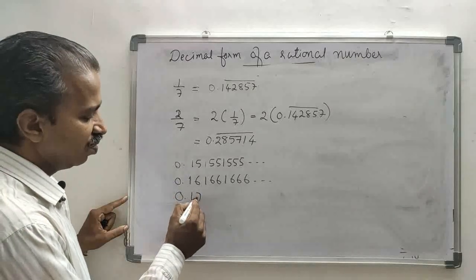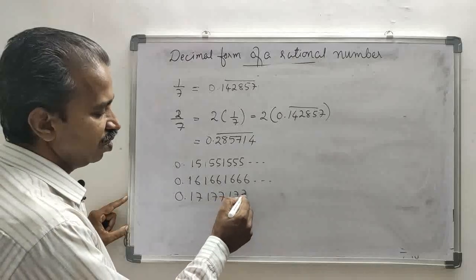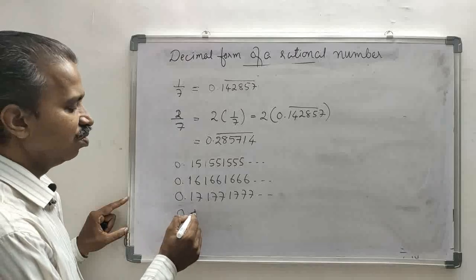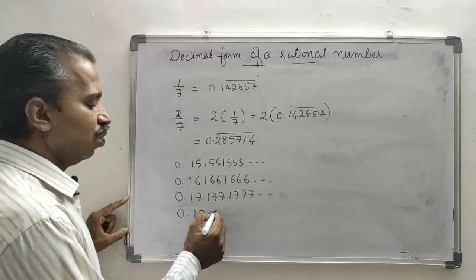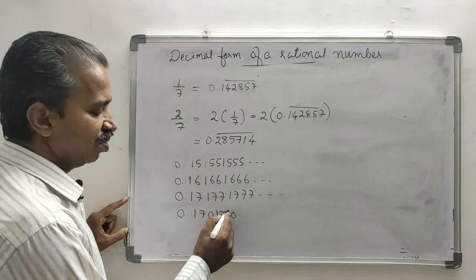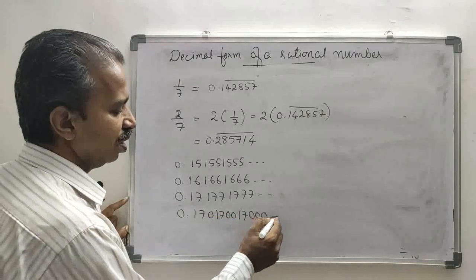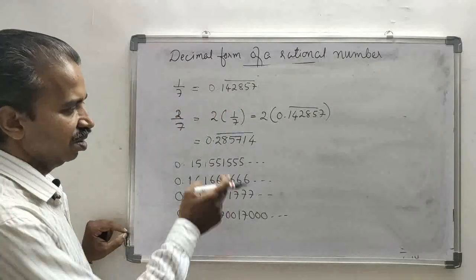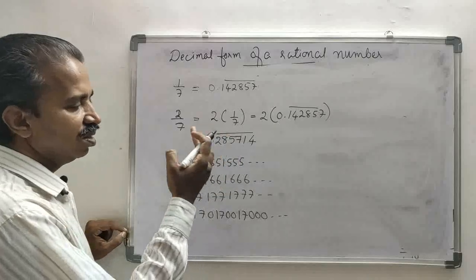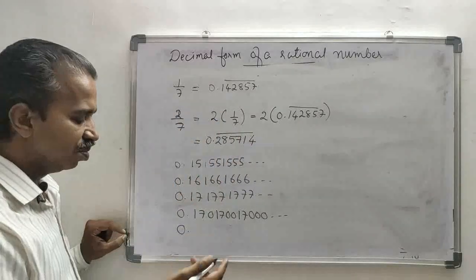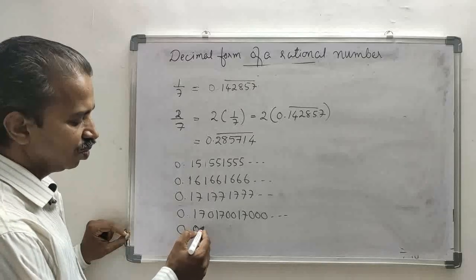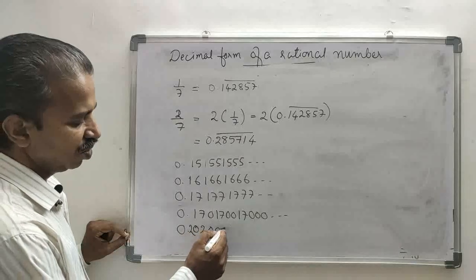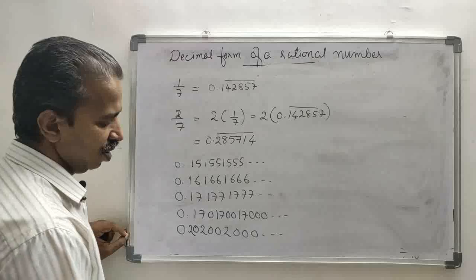You can also write 0.17011100111000... or 0.20200200... — like that you can write any number of irrational numbers between the two rational numbers. Since 2 upon 7 is 0.285714..., any non-terminating non-recurring decimal less than 0.28 and greater than 0.142857 will work, giving infinitely many irrational numbers between any two numbers.